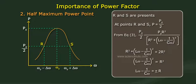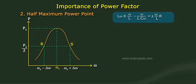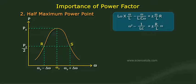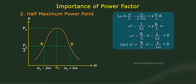Multiplying the equation Lω − 1/Cω equals ±R by ω/L on both sides: ω² − 1/(LC) equals ±(R/L)ω. Therefore, ω² − (R/L)ω − 1/(LC) equals 0, or ω² + (R/L)ω − 1/(LC) equals 0.